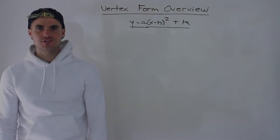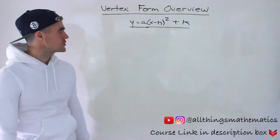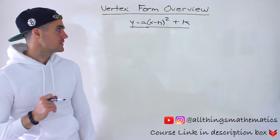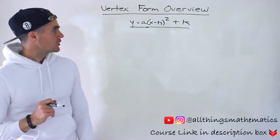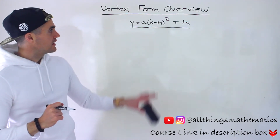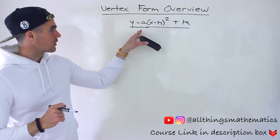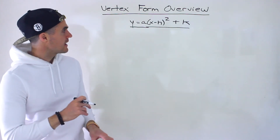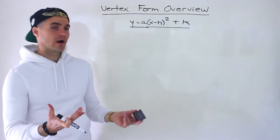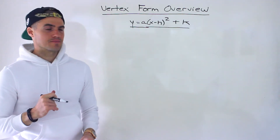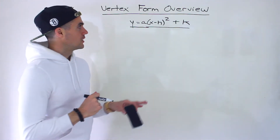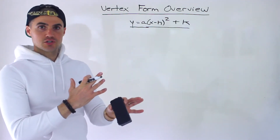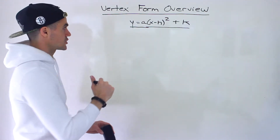What's up everyone? Welcome back. Patrick here. Moving on to the next video dealing with quadratics and the next section. What we're now going to be dealing with is the full vertex form of a quadratic: y equals a bracket x minus h squared plus k.